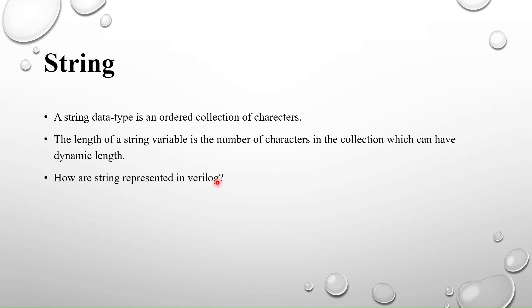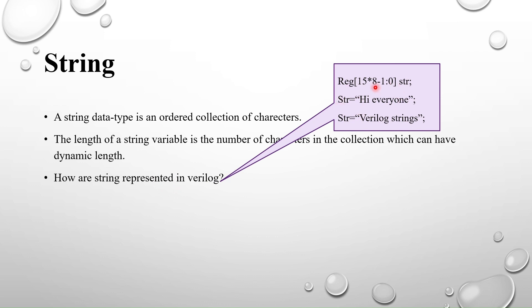How are strings represented in Verilog? Since Verilog doesn't have a string data type, we use the reg data type — for example, reg [15*8-1:0]. Each character takes 8 bits or 1 byte, so 15*8 means you can store up to 15 characters. For example, 'hi everyone' is 11 characters and 'verilog strings' is 15 characters, and you can override the string at runtime.